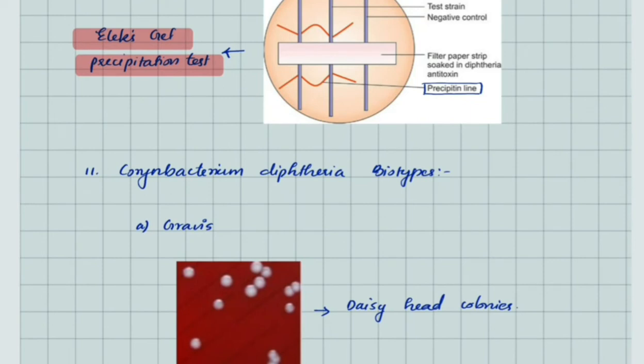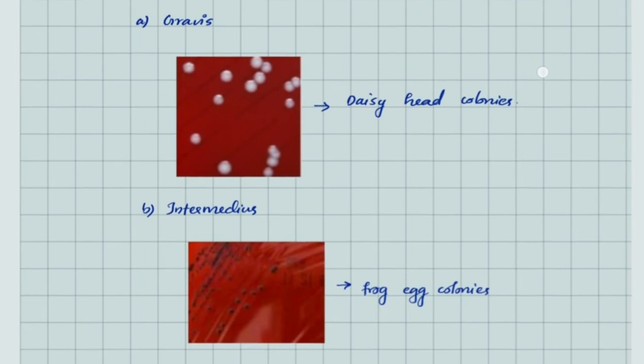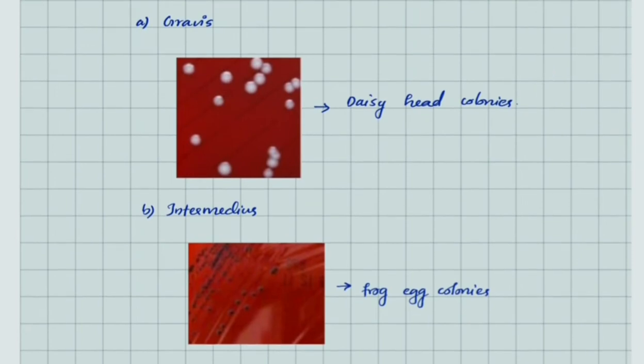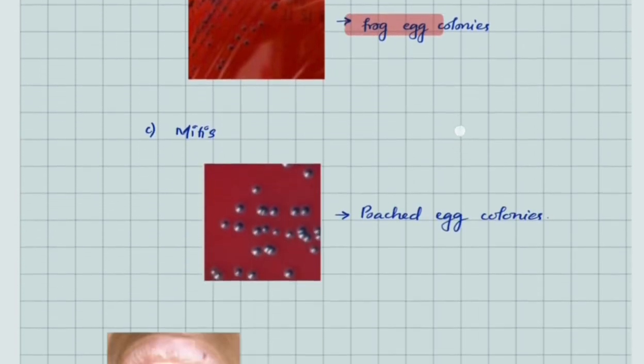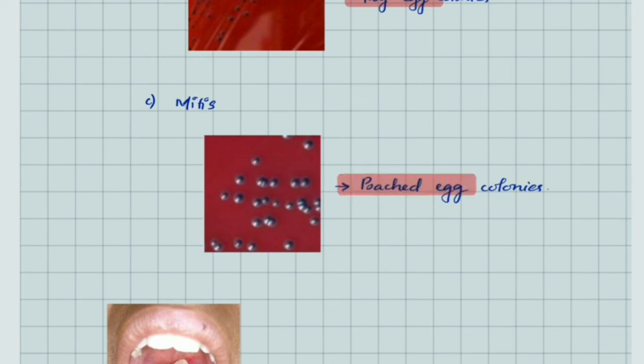The three biotypes of Corynebacterium diphtheriae are: gravis shows daisy head colonies, intermedius shows frog egg colonies which are small black colonies, and mitis shows poached egg colonies.